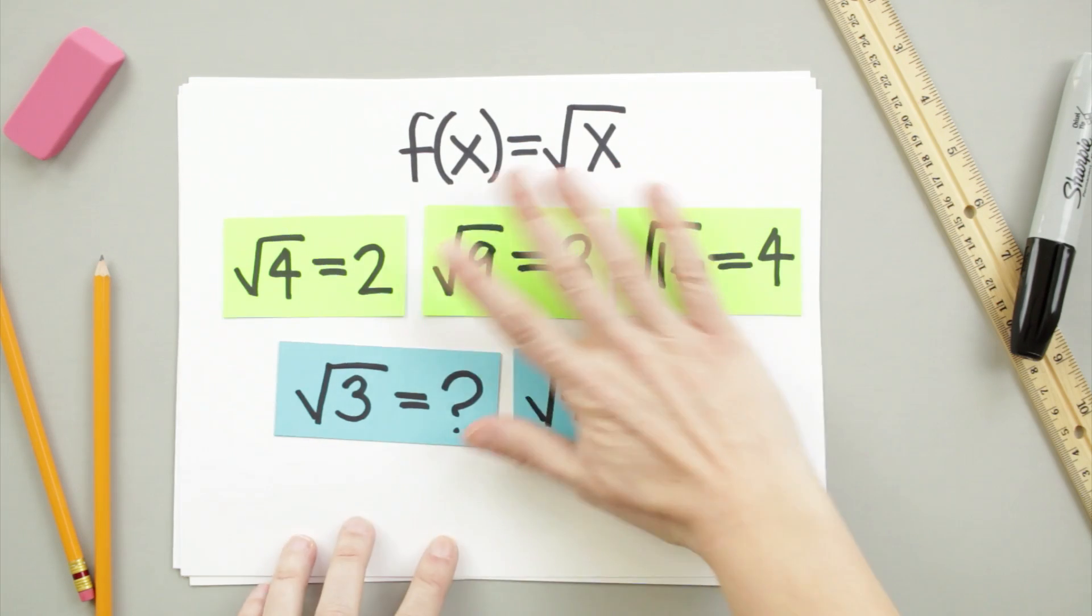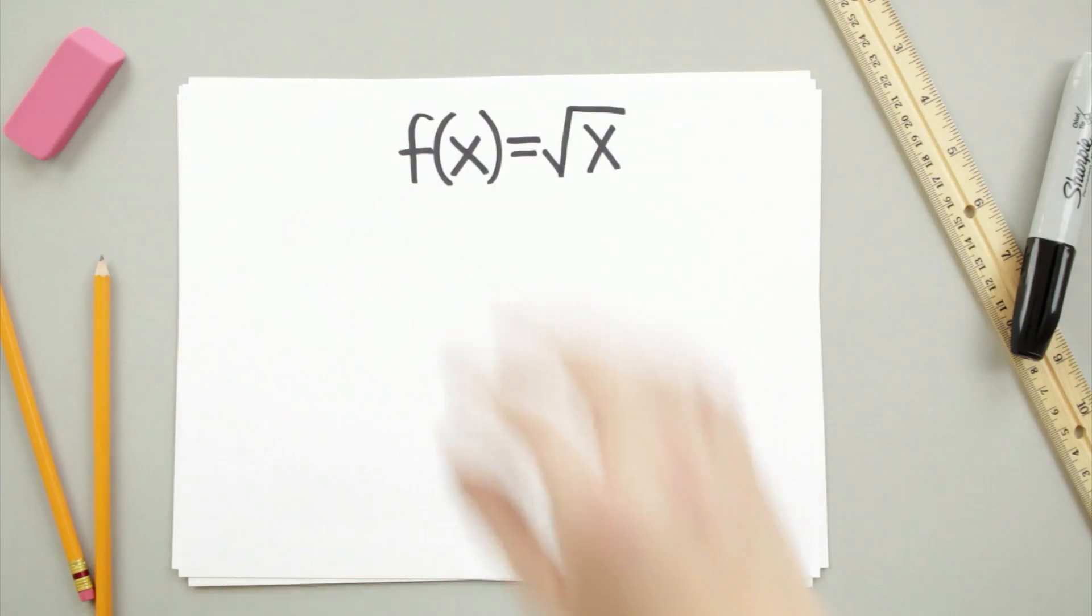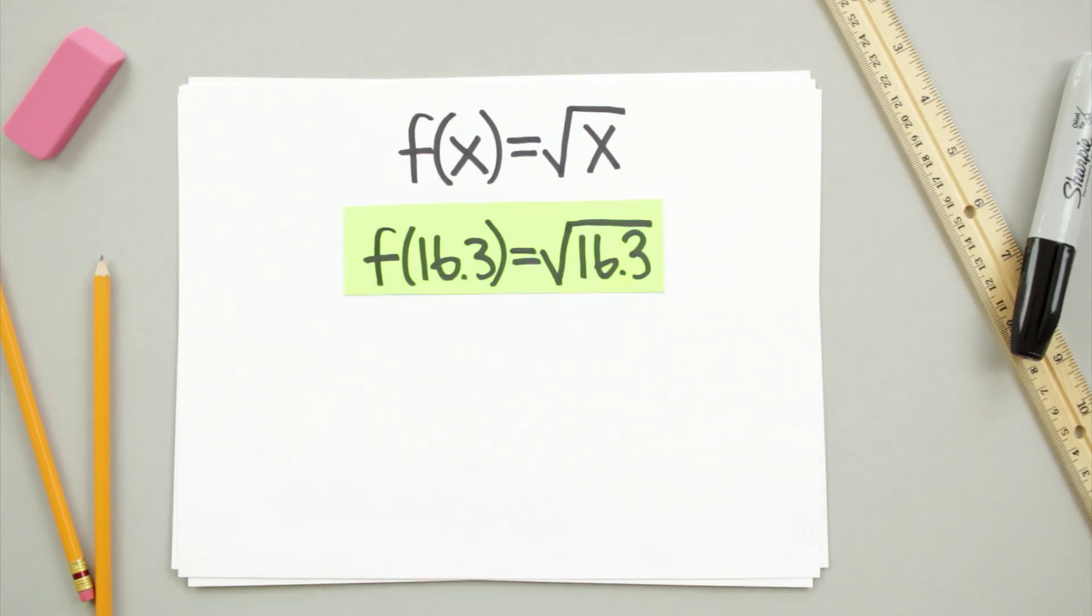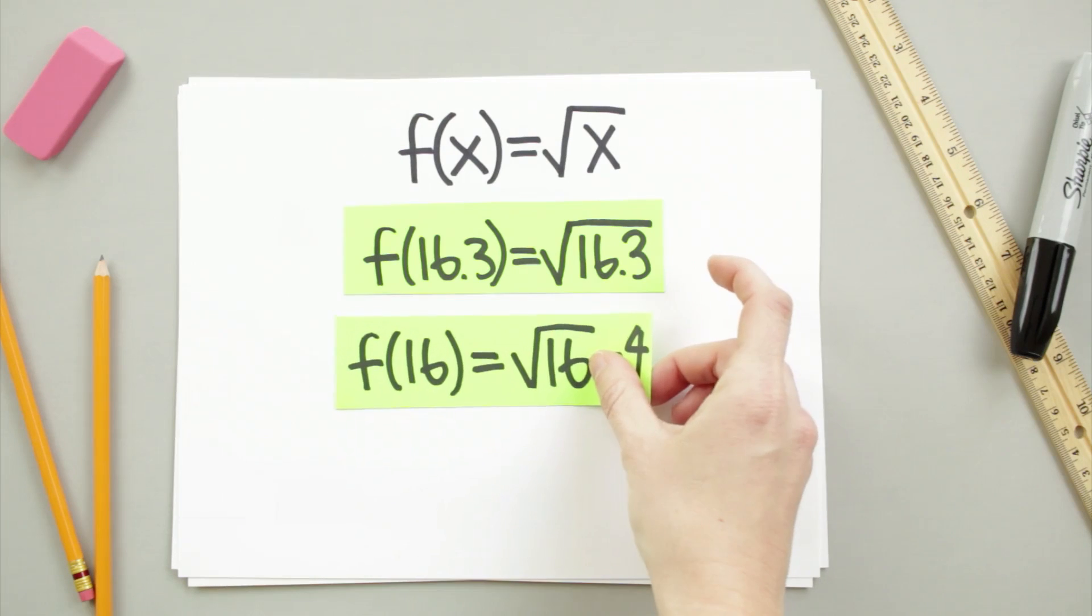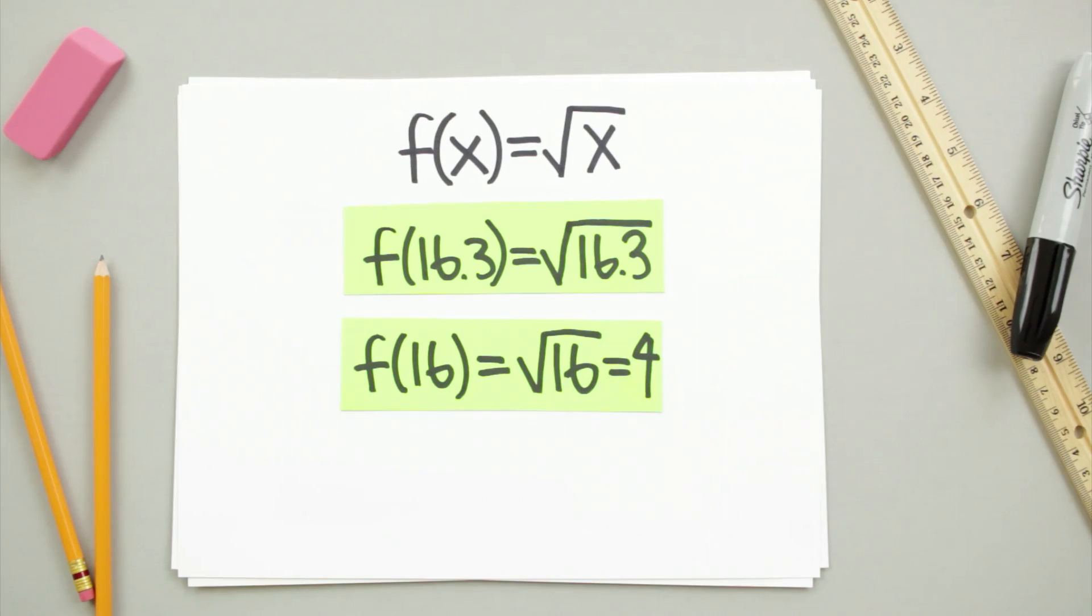Let's go ahead and look at how we can use linear approximation on the square root function. Let's say we want to find the square root of 16.3. That sounds pretty tricky, but we already know that the square root of 16 is 4. So we could say with at least some confidence that the square root of 16.3 is going to be just a little bit more than 4.